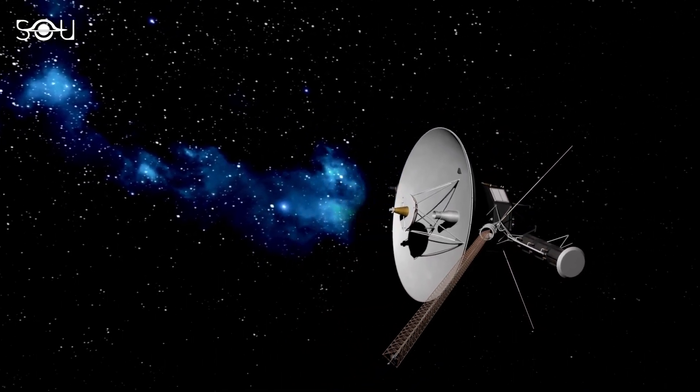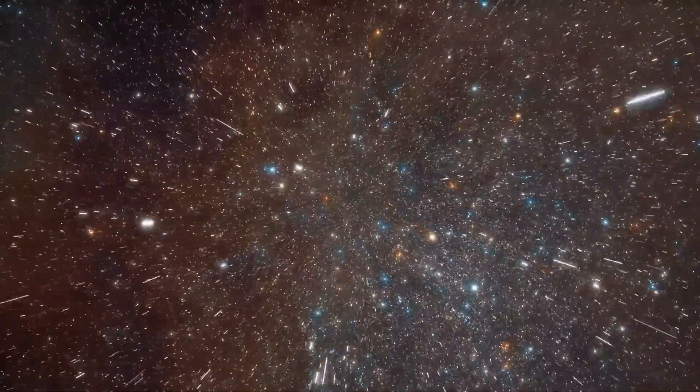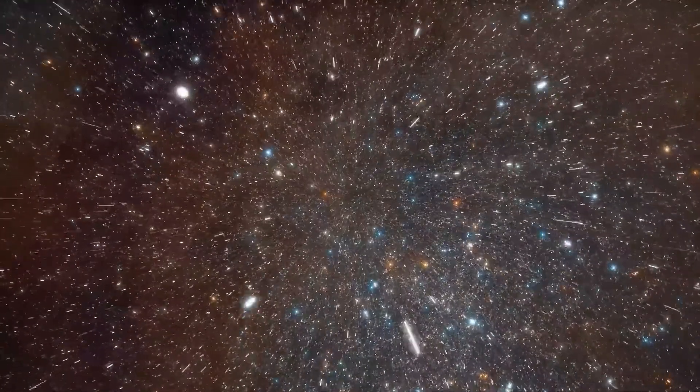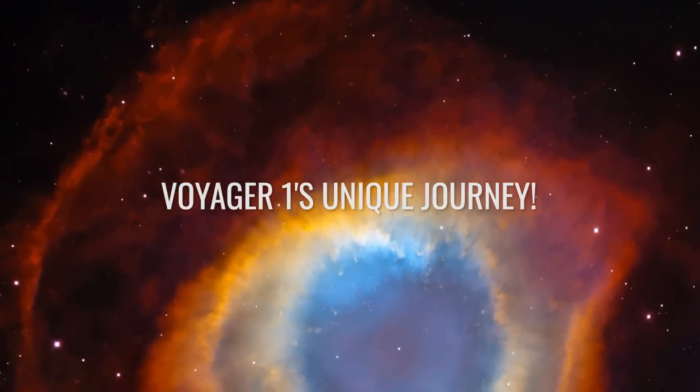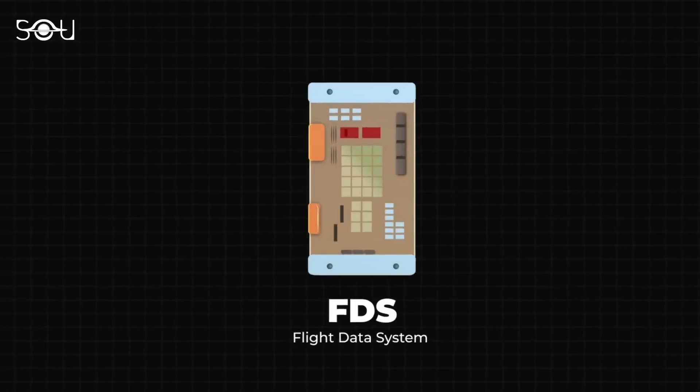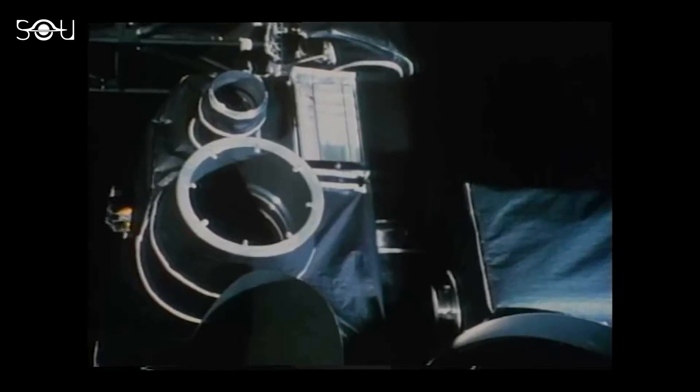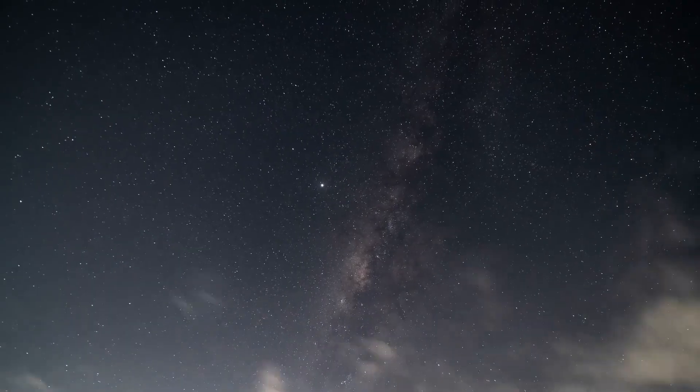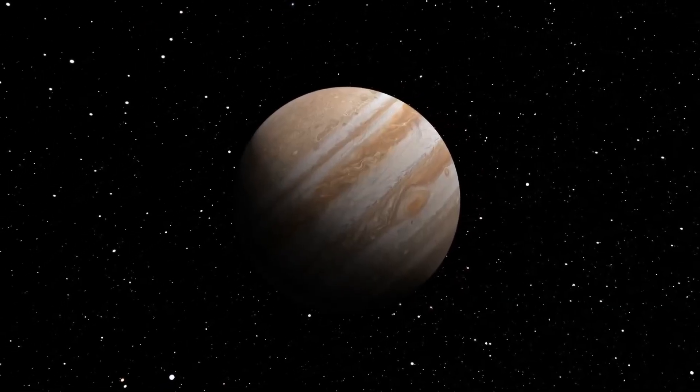The glitch was linked to the Flight Data System (FDS), responsible for collecting data from Voyager 1's scientific instruments and monitoring the spacecraft's health. This data is processed into a single package and sent to another computer, the Computer Command System, which transmits it to Earth through the telemetry modulation unit (TMU). The TMU modulates the binary data onto a carrier signal for transmission to Earth where it is received by NASA's Deep Space Network (DSN) of large radio antennas strategically placed around the globe.